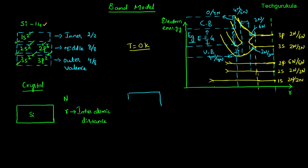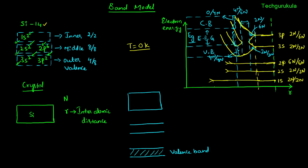If you are given a silicon crystal, it can be equivalently drawn in the band model as follows: the valence band is completely filled with valence electrons — 4n out of 4n states are filled. This is called the valence band. The conduction band above it is completely empty. The y-axis represents the electron energy range, and we will see why the upper band is called the conduction band when we study conduction in semiconductors.